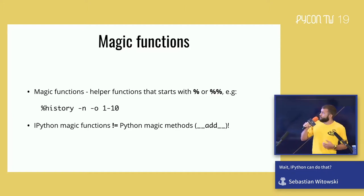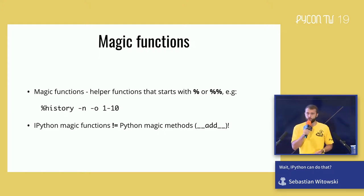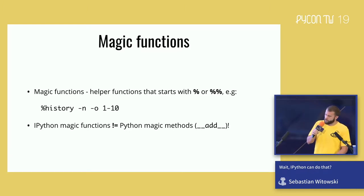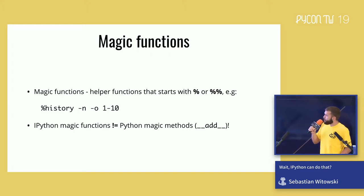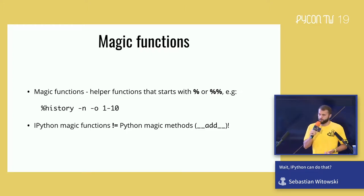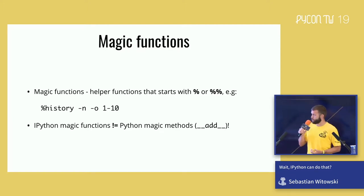One of the coolest features of IPython are the magic functions — a bunch of helper methods that start with one or two percentage signs. The percentage sign distinguishes them from standard Python functions, as they behave slightly differently. For example, they don't require parentheses when passing arguments. Just keep in mind that Python's dunder methods — methods starting with one or two underscores — are also sometimes called magic methods, but those have nothing to do with IPython magic functions.